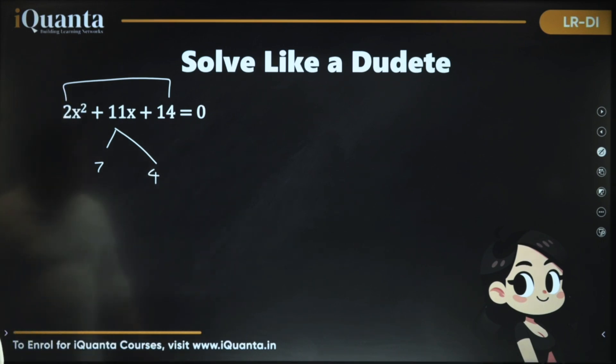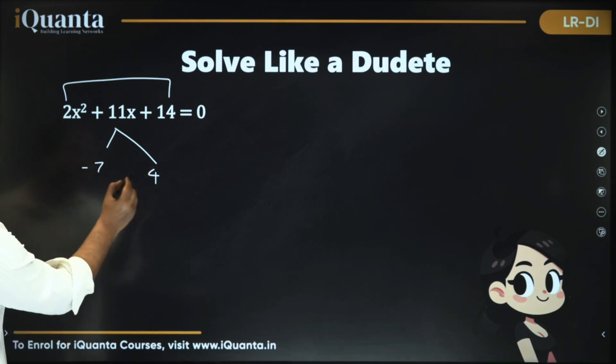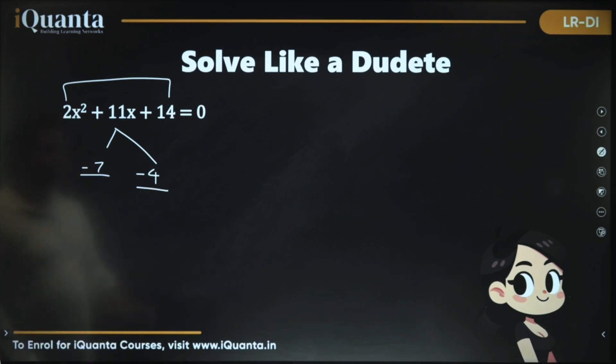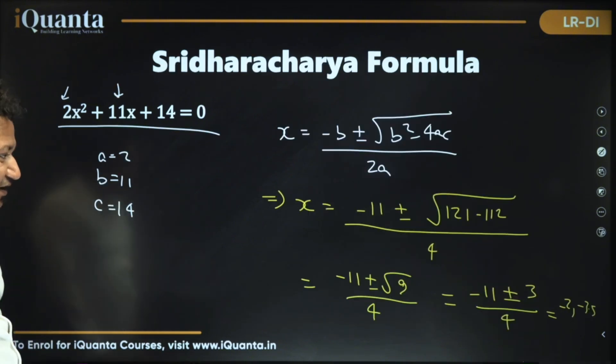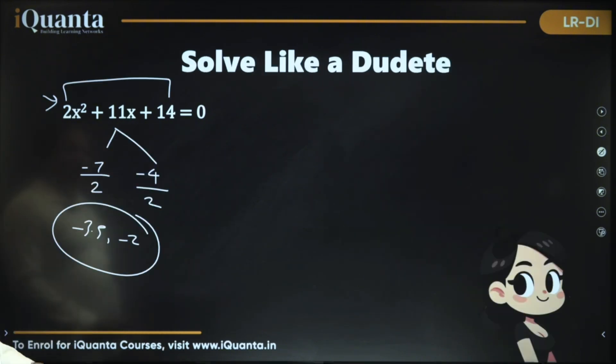Once you have done that, you need to do two things. First, change the sign. If it is positive, make it negative. If it's negative, make it positive. What is it? It's positive. Okay. Let's change the sign. And then divide this by the coefficient of x squared is a. So -7/2, -4/2. We got -3.5 and -2 as the answers. Wow. This is magical. The same thing we got over here also. Nice.